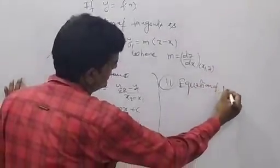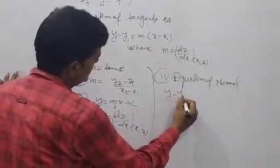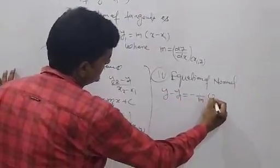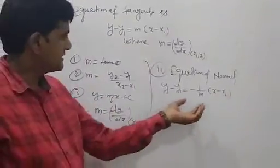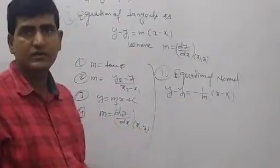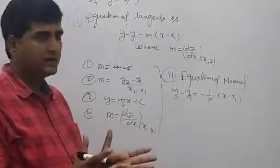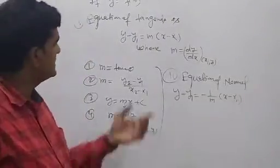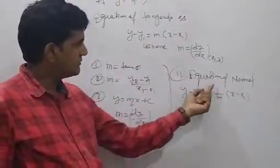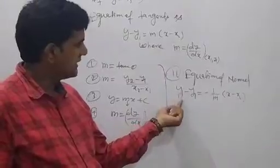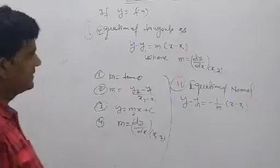Now, equation of normal. The equation is y minus y1 is equal to minus 1/m times (x minus x1). Very simple. Normal means the line which is perpendicular. You already know about perpendicular lines — if one line is perpendicular to another, then m1 × m2 is equal to minus 1. So if for the tangent the slope is m, therefore for the normal the slope is minus 1/m.